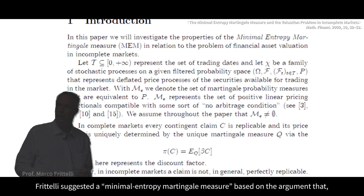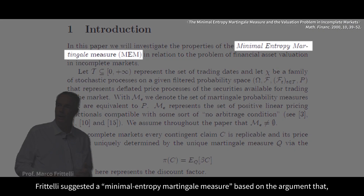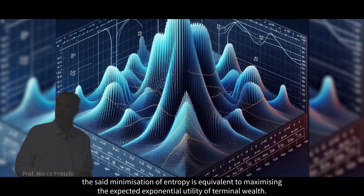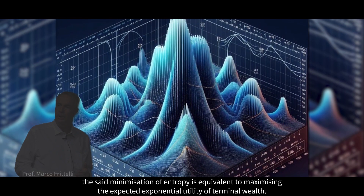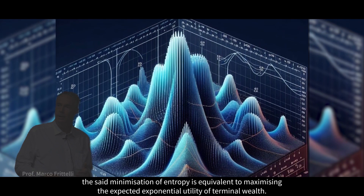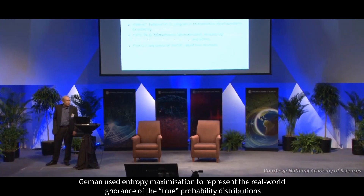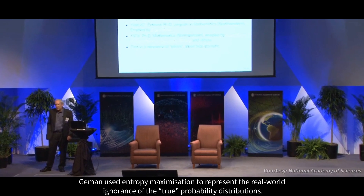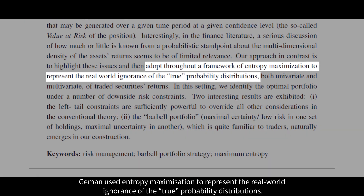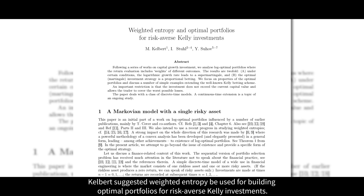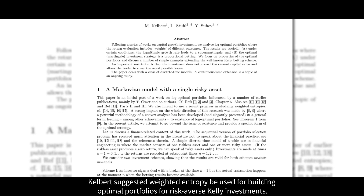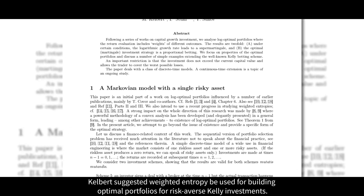Fratelli suggested a minimal entropy martingale measure, based on the argument that, under some conditions, the minimization of entropy is equivalent to maximizing the expected exponential utility of terminal wealth. Goeman used entropy maximization to represent the real-world ignorance of the true probability distributions. Kelbert suggested weighted entropy be used for building optimal portfolios for risk-averse Kelly investments.